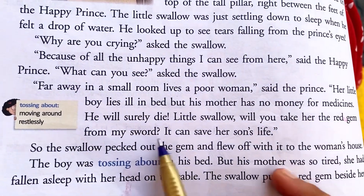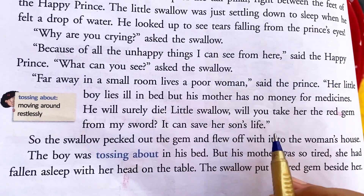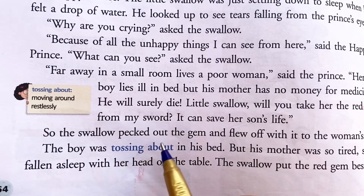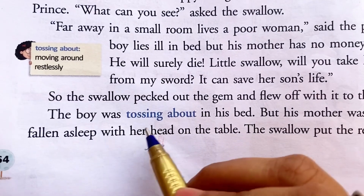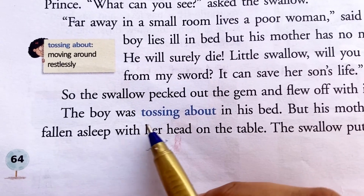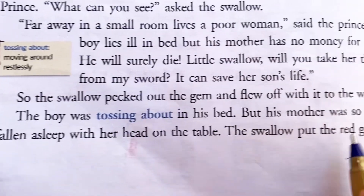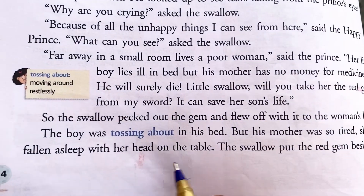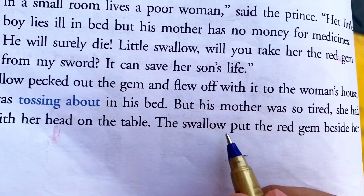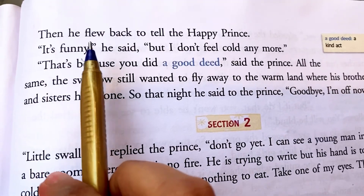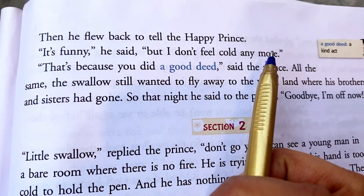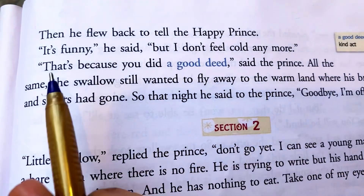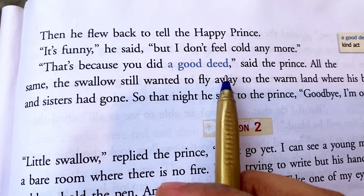'Little swallow, will you take her the red gem from my sword? It can save her son's life.' So the swallow plucked out the gem and flew off with it to the woman's house. Her mother was very tired and had fallen asleep with her head on the table. The swallow put the red gem beside her, then flew back to tell the Happy Prince. 'It's funny,' he said, 'but I don't feel cold anymore.' 'That's because you did a good deed,' said the prince.